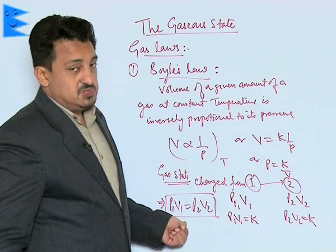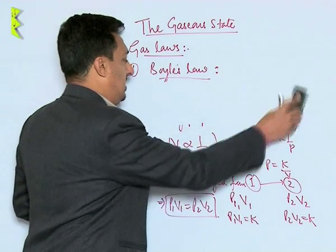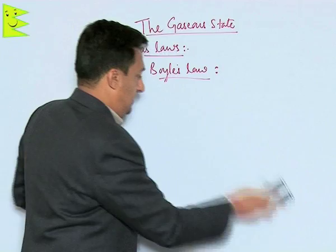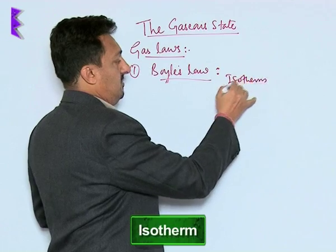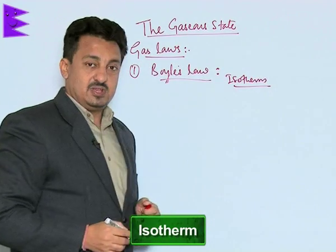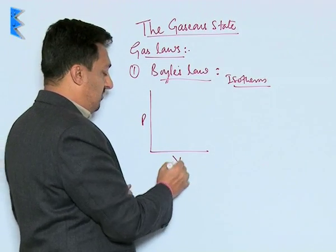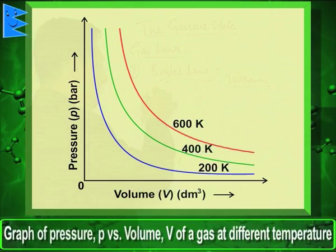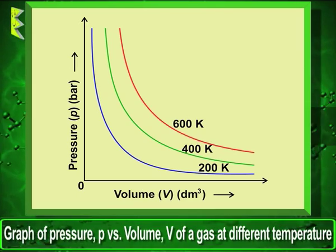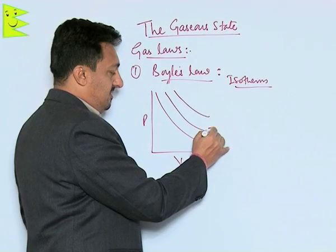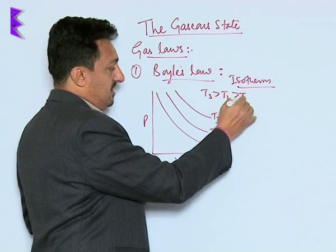Since in all these observations we kept the temperature constant, these observations are called isotherms and the graphs plotted are also called isotherms — 'isotherm' means constant temperature. When pressure and volume are plotted, we get curves like this. These lines represent T1, T2, and T3, where T3 is greater than T2, which is greater than T1.